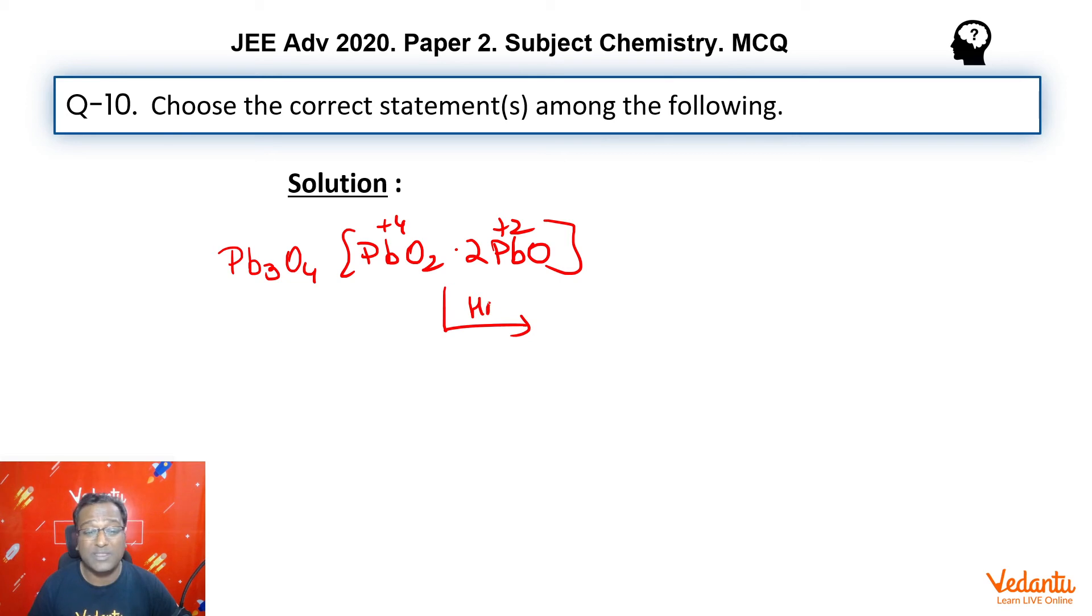Now when this reacts with HNO3, we know that it's a non-redox reaction. Then PbO gives you lead +2 gives you lead nitrate and lead +4 remains as it is, gives you a brown precipitate or a chocolate brown precipitate.